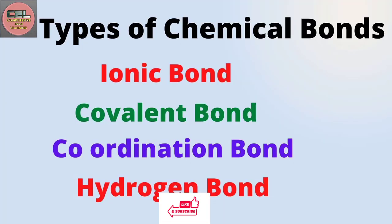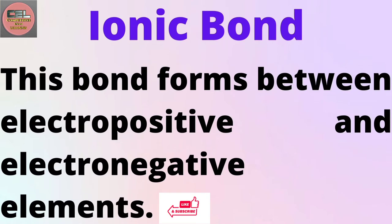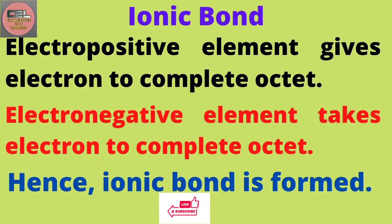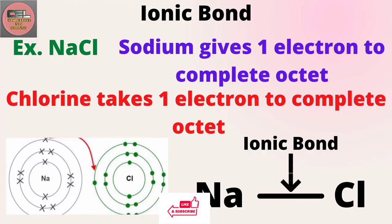An ionic bond is formed between a cation and an anion, or you can say between an electropositive and an electronegative element. As you will see in the case of sodium chloride: sodium is an electropositive atom that forms a cation, while chlorine is an electronegative atom that forms an anion. An attraction force acts between the cation and anion, forming a bond called an ionic bond. So in sodium chloride, the bond between sodium and chlorine is ionic.